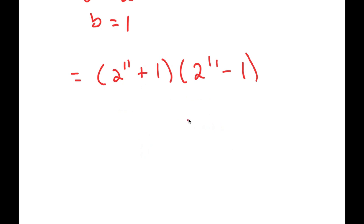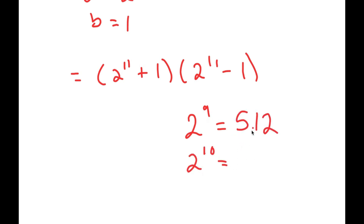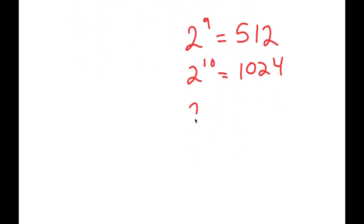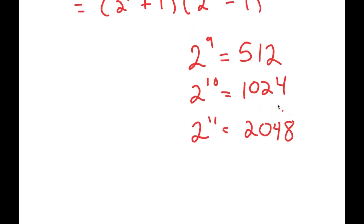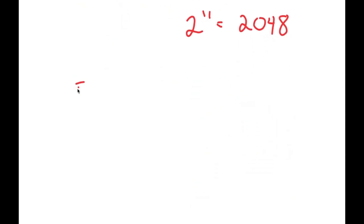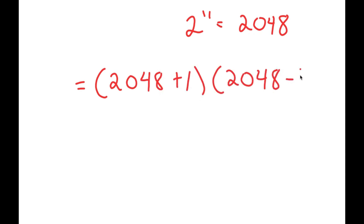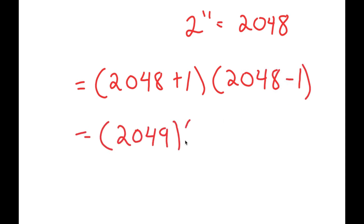Now, what is 2 to the power of 11? Well, 2 to the power of 9 is 512. 2 to the power of 10 is double of 512, which is 1024. So 2 to the power of 11 is double of 1024, which is 2048. So now I get 2048 plus 1, times 2048 minus 1. Now, 2048 plus 1 is 2049, and 2048 minus 1 is 2047.